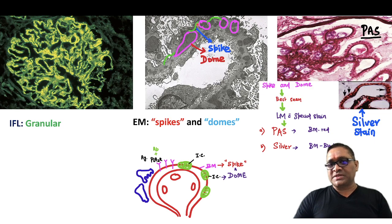And in between the green color, you can see this is the basement membrane. So this basement membrane is forming a spike. Immune complexes are forming dome. So this is called as a spike and dome appearance.